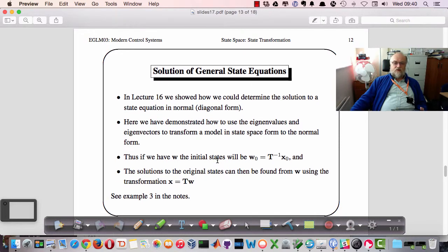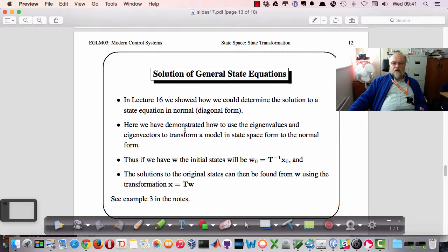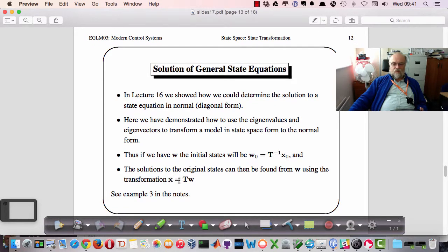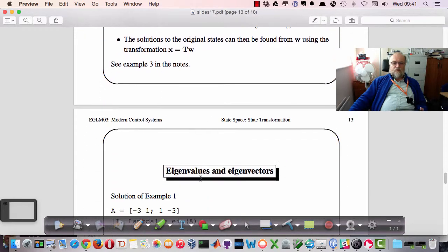So if we have that, then as we showed in the previous lecture, which was, the slides were lecture 16, but I think it was contact hour 22 or something, certainly before Easter, then we could show, we could determine the solution of a state equation if we had the system in diagonal form. So if we use the eigenvalues, eigenvectors to transform a model in state-space form, we can convert it to normal form. So we can then choose the initial states to be equal to w0 is T minus 1 AT x0, and then the original states can be found by using x equals Tw. And that will be an example that we'll show you in the class. We'll go through an example like that.